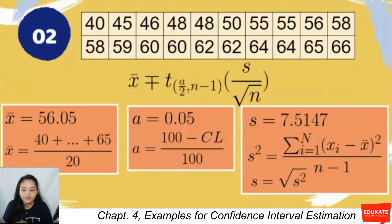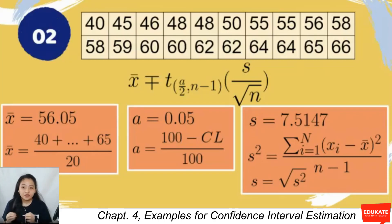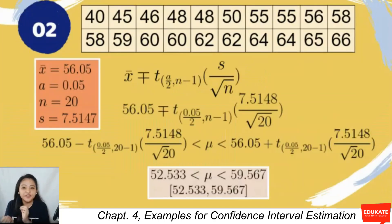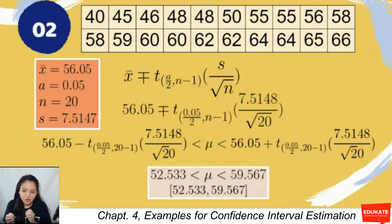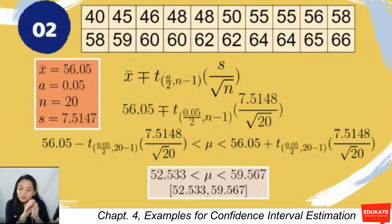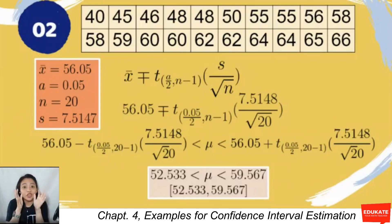Another way to compute alpha is (100 − CL) / 100. The point estimate of the population standard deviation computed from the calculator is s = 7.5147. Substituting into the confidence interval: 56.05 ± t sub (0.05/2, n−1) × (7.5148 / √20).